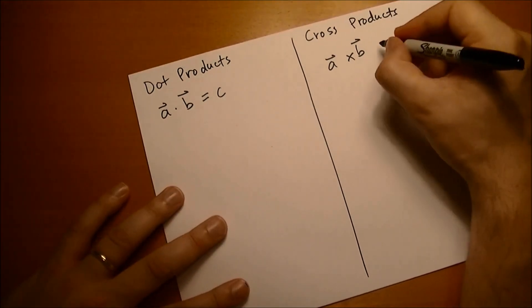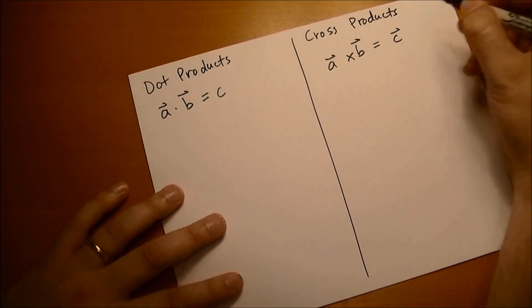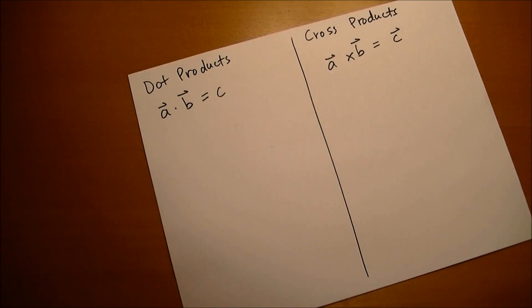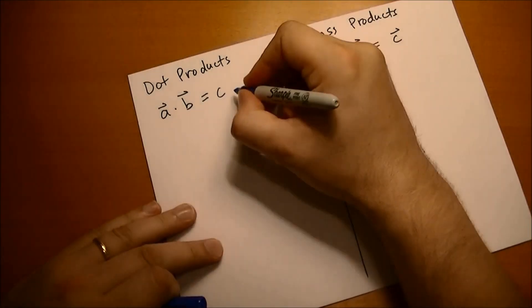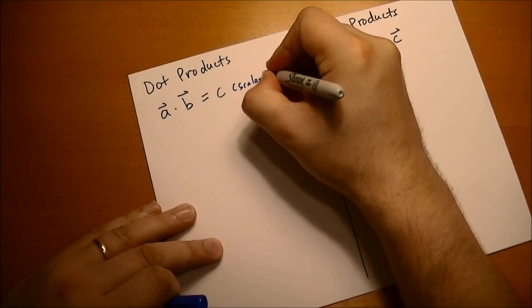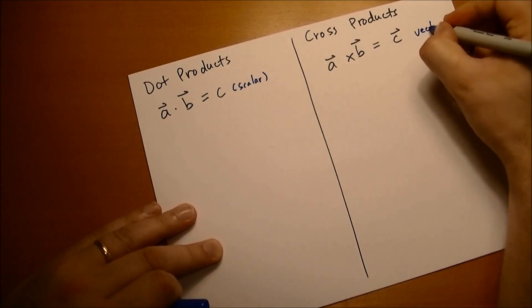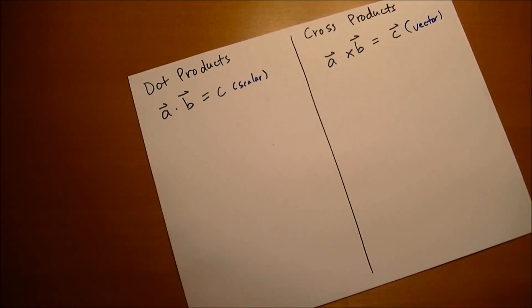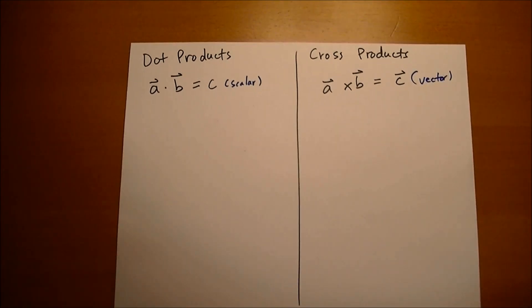Right off the bat the first thing you notice is that this is going to equal some scalar, whereas this is going to equal some vector. So just remember dot products give you scalars, cross products give you vectors. If you're wondering, yes, this will plague you for the rest of the conversation, trying to remember which one is which.